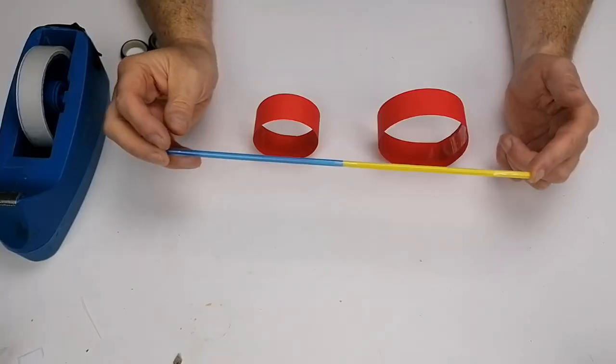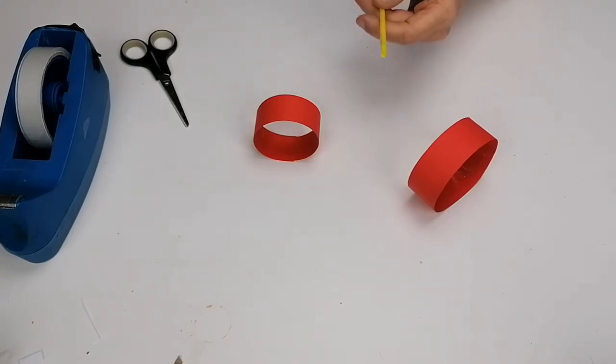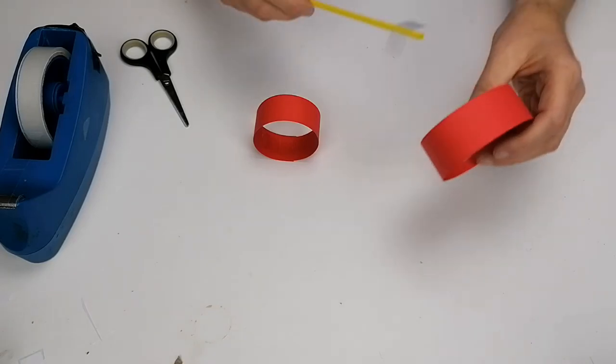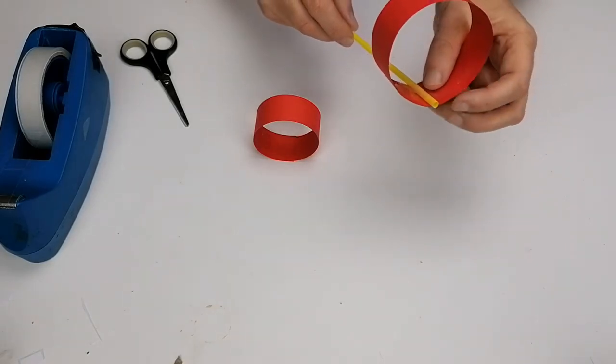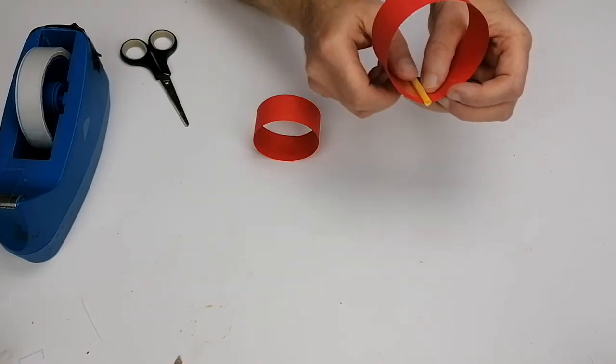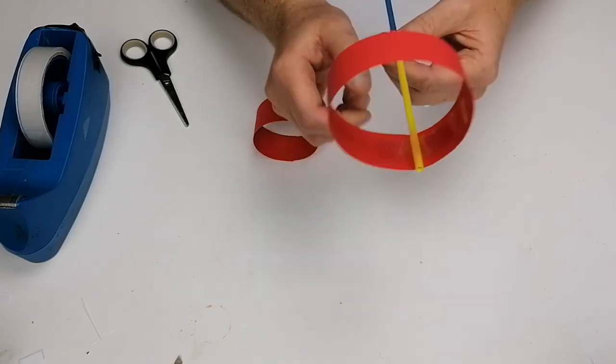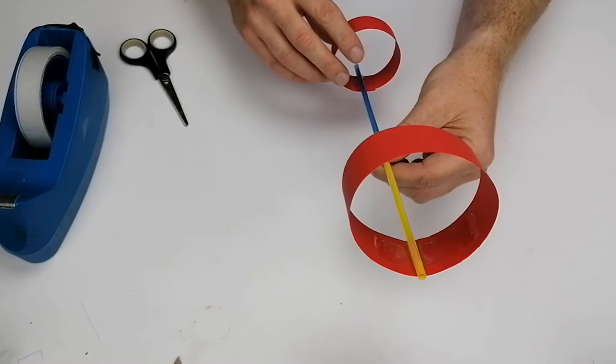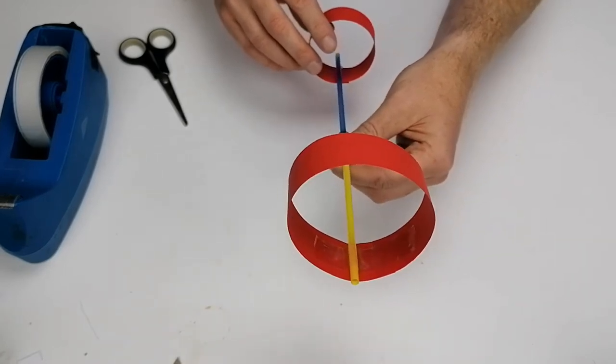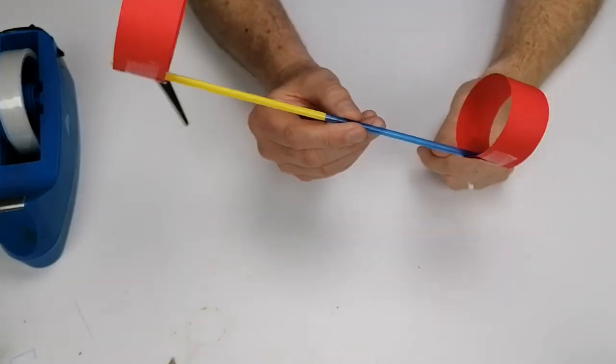Now that we have the two straws together, we're going to attach the hoops. Put a little bit of sellotape onto the straws first, then put it into the inside of the hoop, not the outside. Try and line it up so it's as straight as possible with the straw. Put the second one on with another bit of tape and try to align them as best you can. You can see now the finished hoop plane.